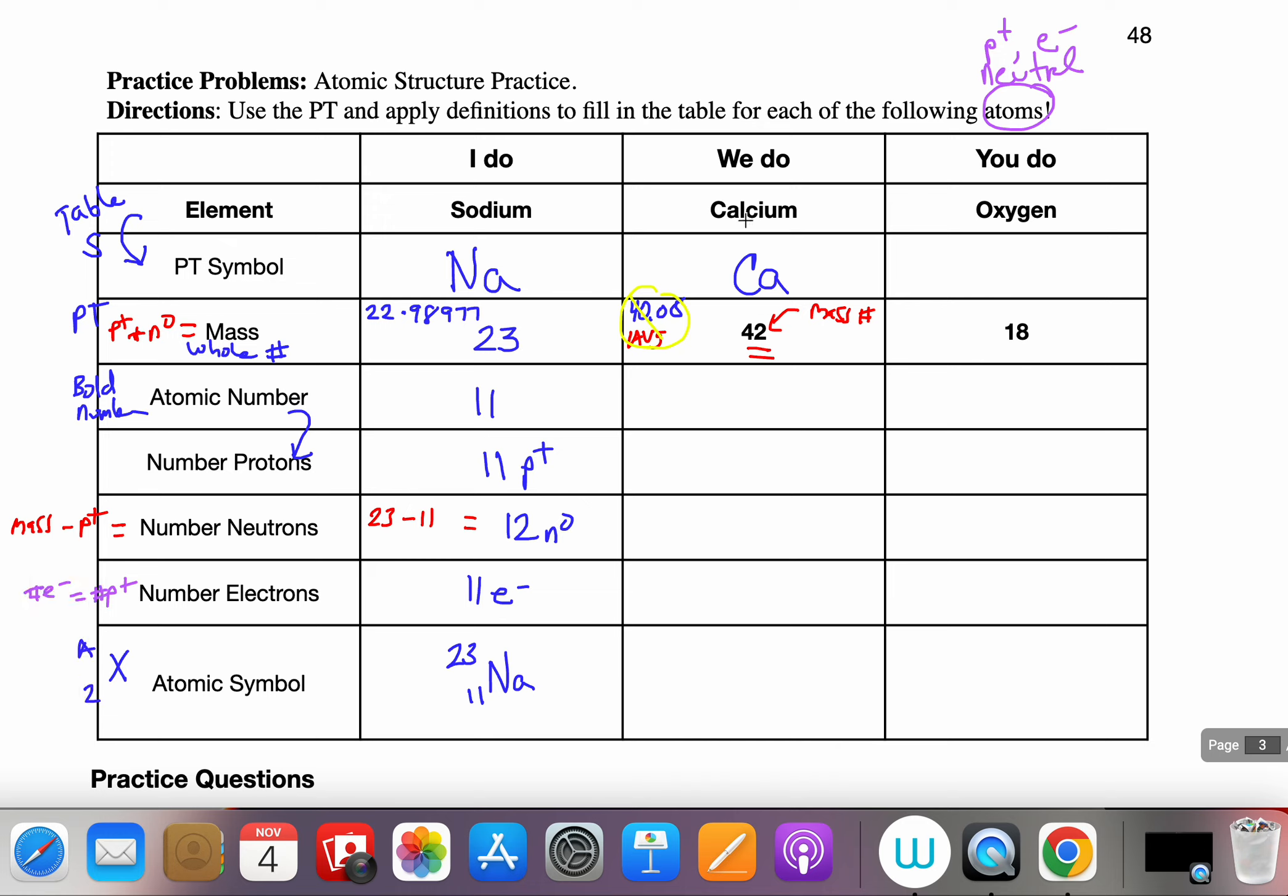Now the atomic number, I find calcium Ca's box on the periodic table and its atomic number is 20. The atomic number is defined as the number of protons, so I know that it has 20 protons. The number of neutrons is not listed but I know it's mass minus the proton. So my mass in this case is 42 minus 20. So in this structure I have 22 neutrons. So it's 22 neutrons, 20 protons.